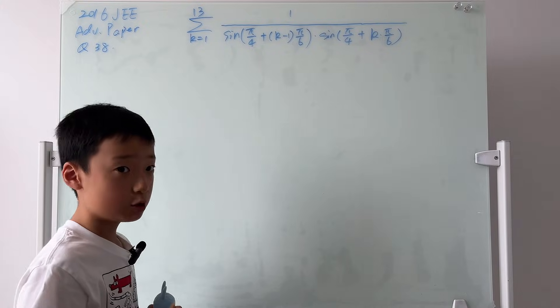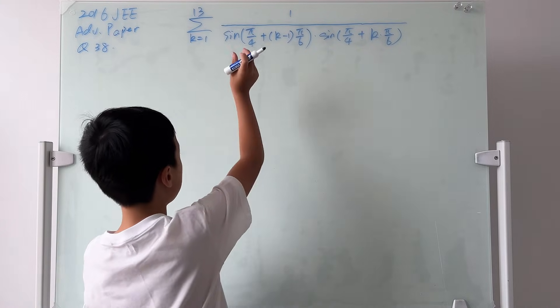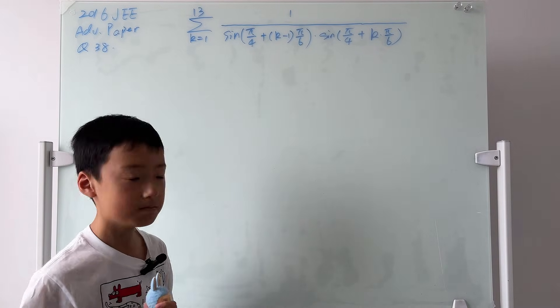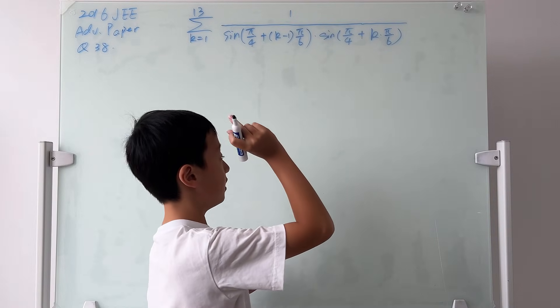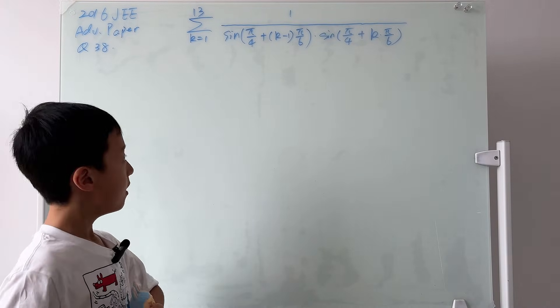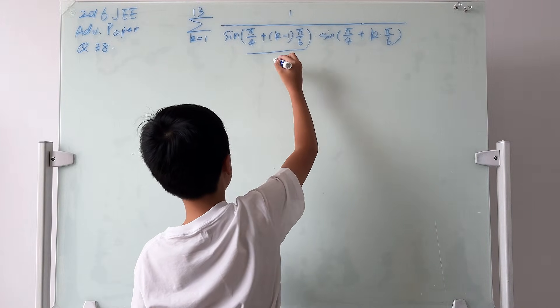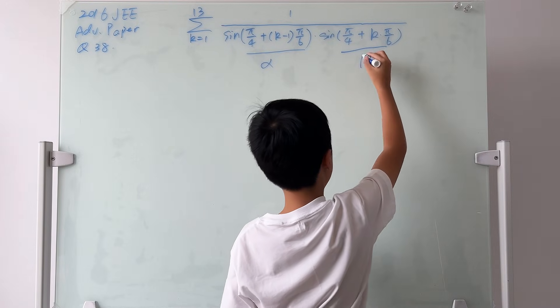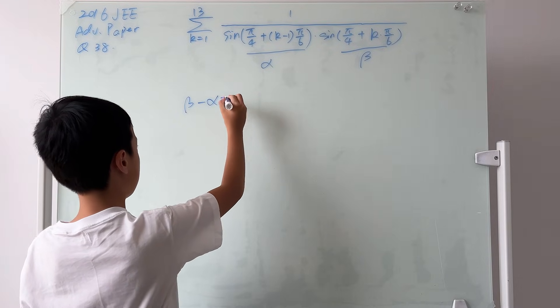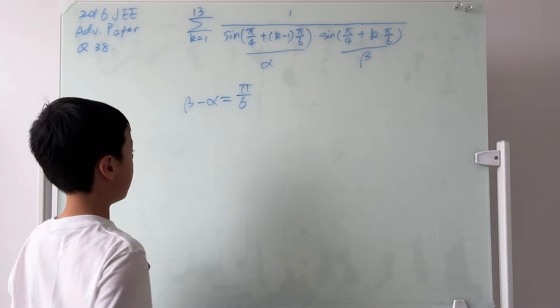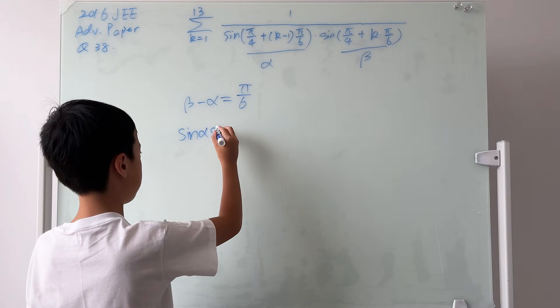Look at the angle in the two sines. What is the difference between the two angles? The first angle is pi over 4, the same. But here it's k minus 1 times pi over 6, and the second one is k times pi over 6. They only differ by pi over 6. So if we name this angle to be alpha and this angle to be beta, then we obviously know that beta minus alpha will equal pi over 6. And what we're trying to figure out is what sine alpha times sine beta is.